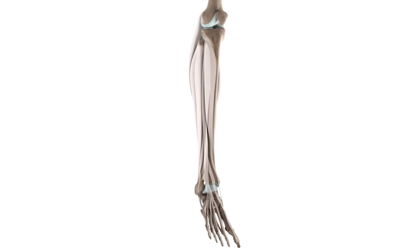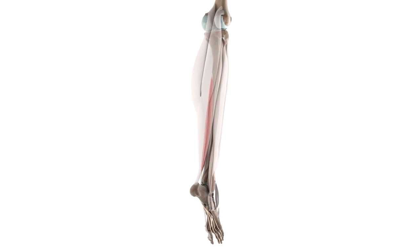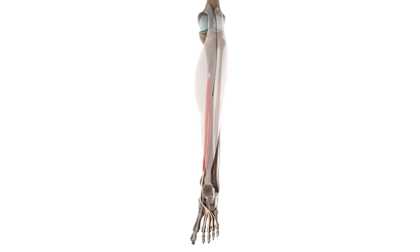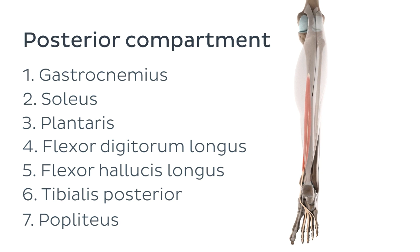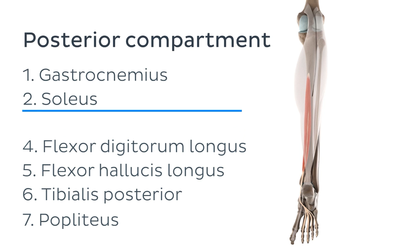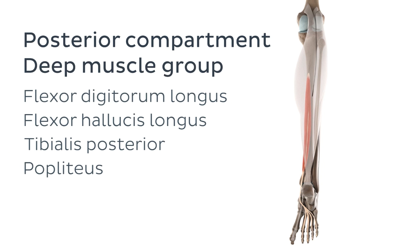But before we dive into the nitty gritty, let me show you the muscle first and put it into context. You can now see the flexor digitorum longus muscle highlighted on your screen in all its glory. As you can see from its location, this muscle is part of the posterior compartment of the leg. This compartment is divided into two muscle groups: a superficial one and a deep one. The flexor digitorum longus is part of the deep muscle group, which is situated below the superficial subcompartment.